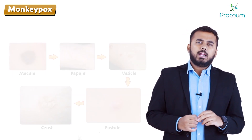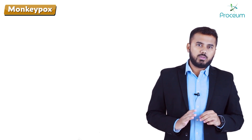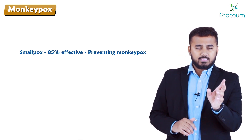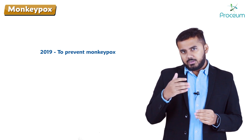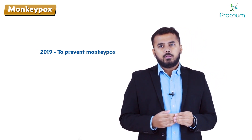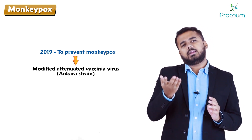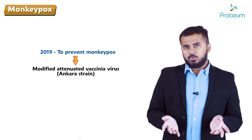There is no specific vaccine for monkeypox. The smallpox vaccine has been shown to be 85% effective in preventing monkeypox. In 2019, a new vaccine was introduced — a modified attenuated vaccinia virus using the Ankara strain — specifically to prevent monkeypox.